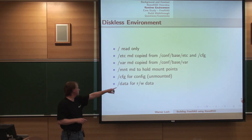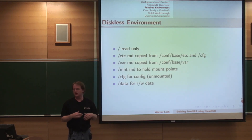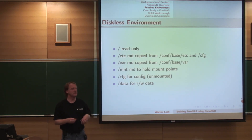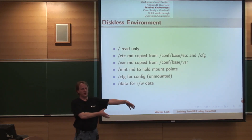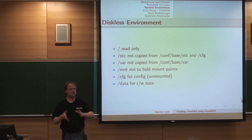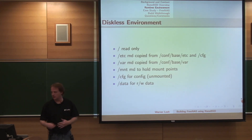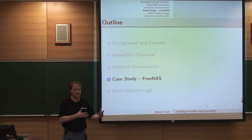The third partition is /cfg. Whenever you make a change to the system — if you change a password, create a new SSH key, do anything along those lines — you have to run a command that mounts up the config partition, copies the files that have changed to it, and then unmounts the partition. This is done for safety, because file systems that are unmounted during a power failure generally don't get corrupted. When the system boots later, in addition to getting the files from the default location, it mounts this partition and overwrites anything you've changed. There's also /data for read-write data.